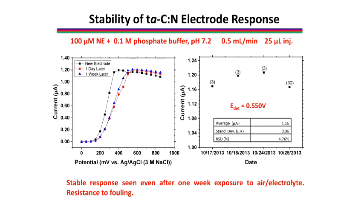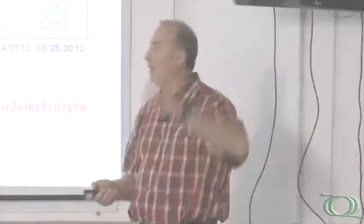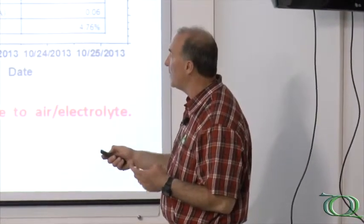The final piece of data I'll show you is the stability — that's another characteristic of diamond, it tends to be quite stable. These are hydrodynamic voltammograms for norepinephrine. The black curve is a new electrode. After one day exposing to lab air and repeating the measurement, and then after one week exposing to the laboratory air and repeating the measurement, you can see there's a slight increase in the half-wave potential, but virtually little. So this material is very, very resistant to deactivation upon air exposure — very, very good stability.